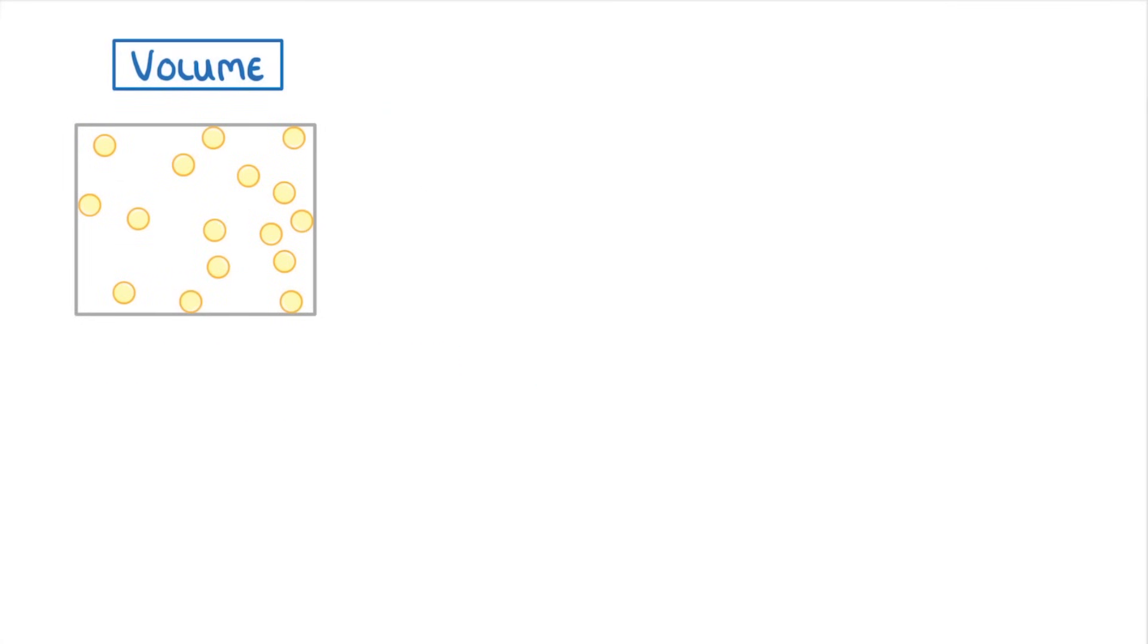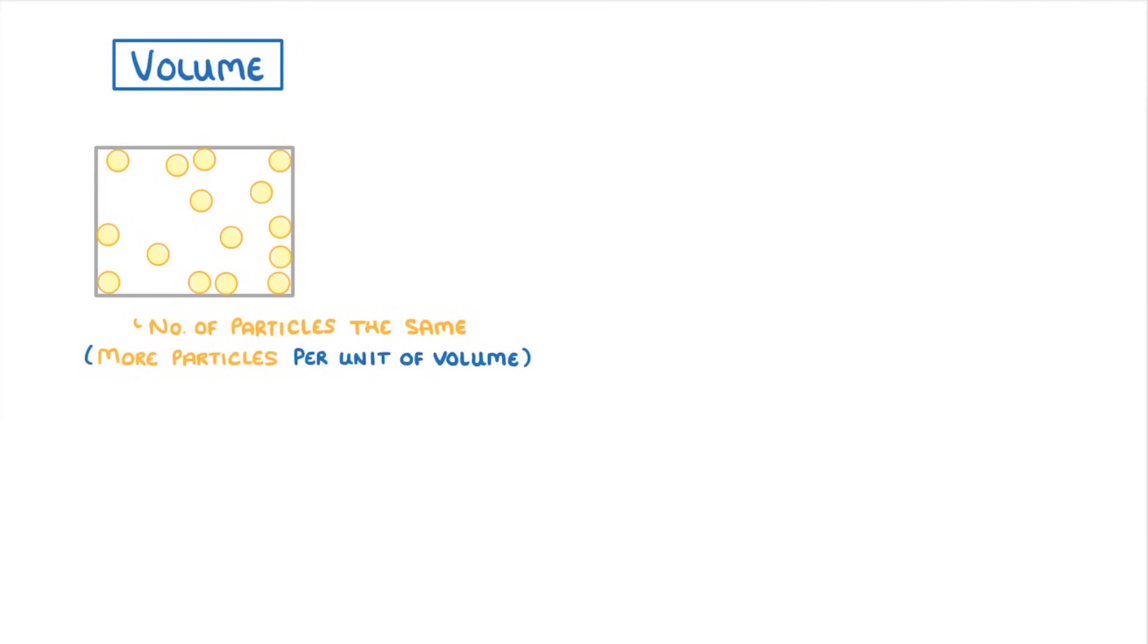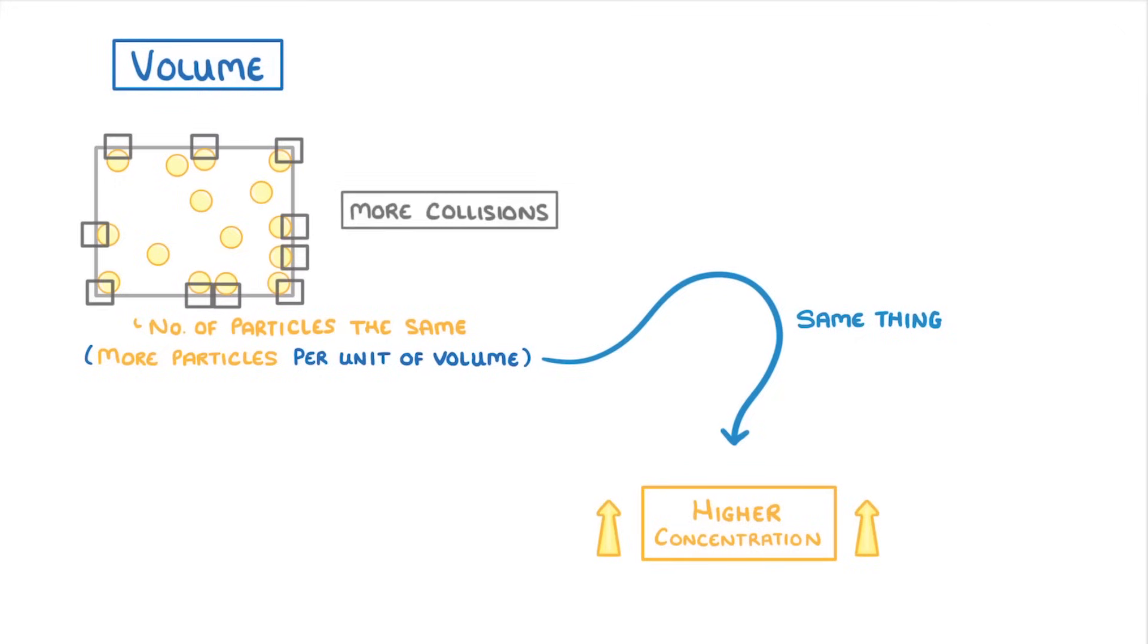Finally, we have volume. If we made our container smaller but kept the number of particles the same, then there would effectively be more particles per unit of volume, which is actually the same thing as saying there's a higher concentration of particles. As the particles no longer have as far to travel between each collision, there now could be more collisions, meaning a higher pressure. So as volume decreases, pressure increases.